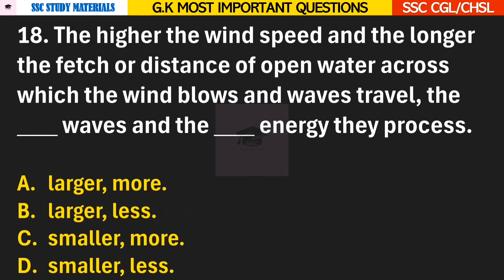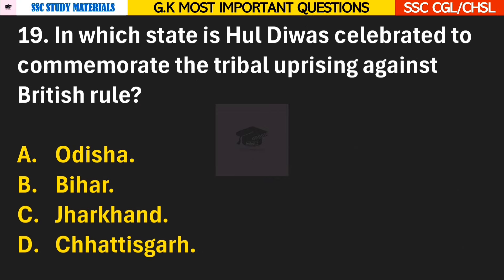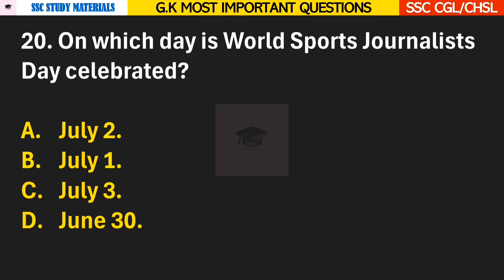Question 18: The higher the wind speed and the longer the fetch or distance of open water across which the wind blows and waves travel, the dash waves and the dash energy they possess? Answer A — Larger and more. Question 19: In which state is Hul Diwas celebrated to commemorate the tribal uprising against British rule? Answer C — Jharkhand. Question 20: On which day is World Sports Journalist Day celebrated? Answer A — it is celebrated on July 2nd.